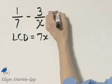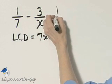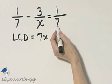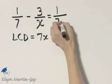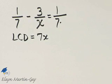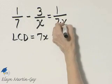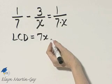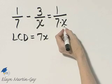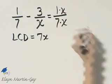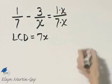We need to write each fraction as an equivalent fraction with a denominator of 7x. Let's ask ourselves: 7 times what factor gives me a product of 7x? Well, 7 times x gives me a product of 7x, and if I multiply the denominator by x, I must do the exact same thing in the numerator.